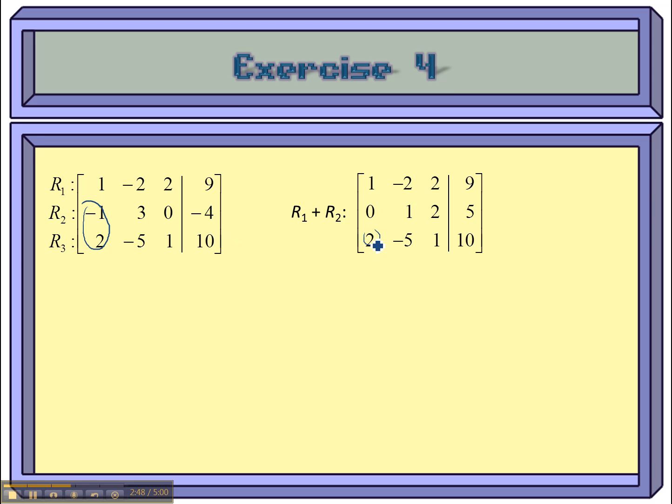Now, I need to get rid of this two. And since that two is there, I can only use the one that's on top in row one to get rid of it, but that needs to be a negative two. So, I need to do the row operations as negative two times r1 plus r3.